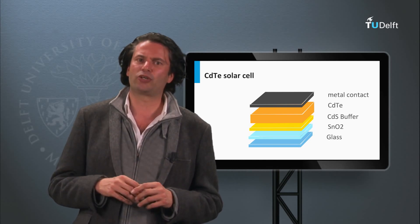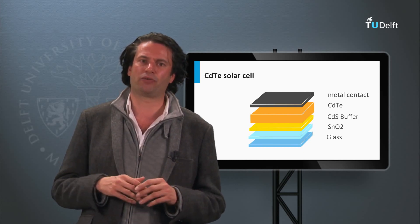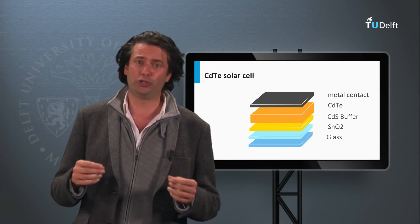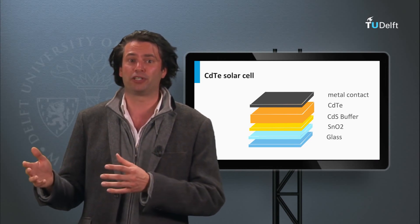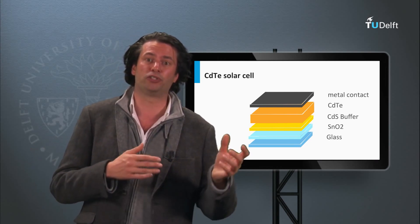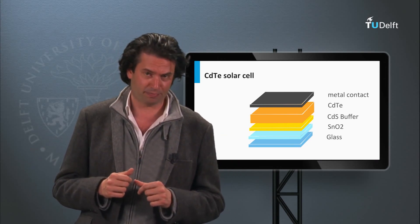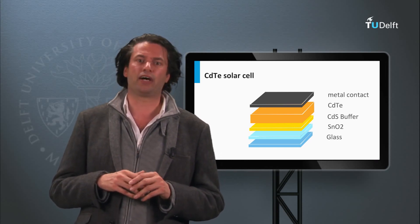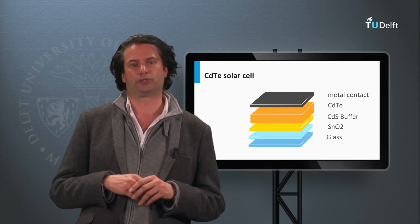Copper containing contacts have been used as back contacts, however in long timescales they may face instability problems due to the diffusion of copper through the cadmium telluride layer up to the cadmium sulfide buffer layer. Nowadays a stable antimony telluride layer in combination with molybdenum is used.